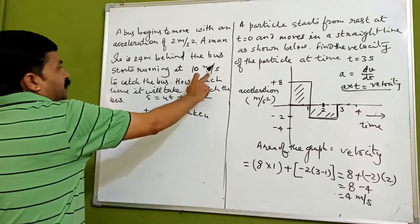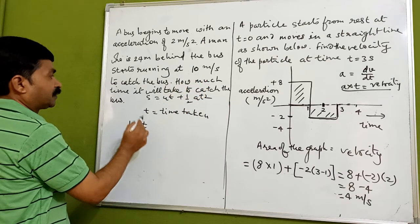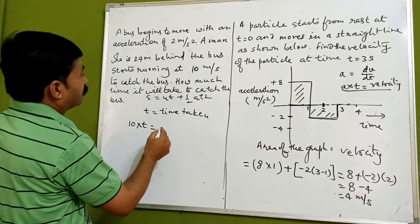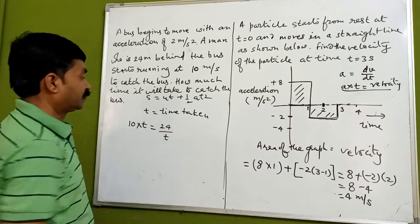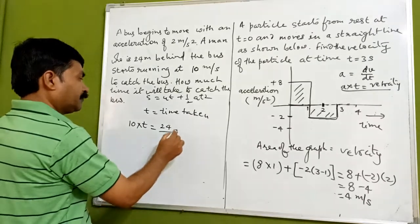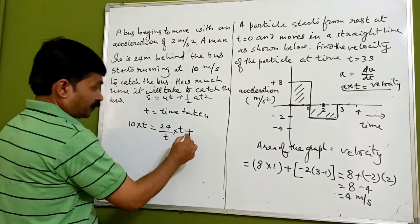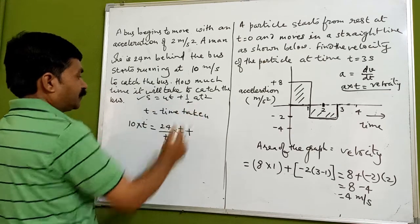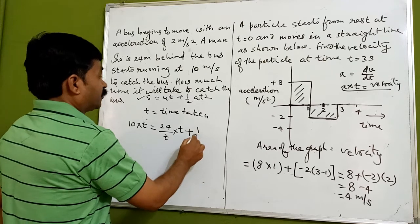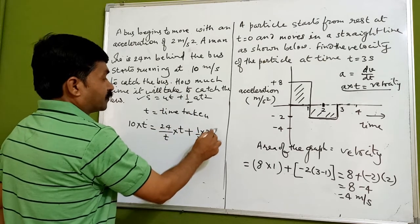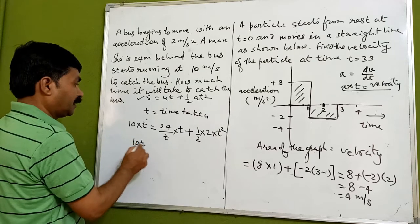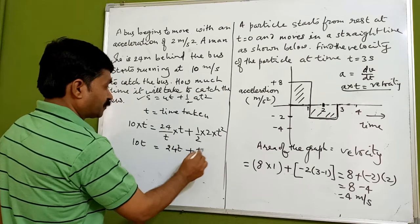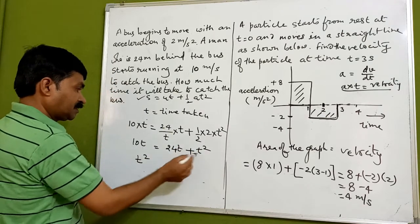Using the equation s = ut + ½at², the man's distance covered is 10t. The bus starts from rest so its distance is ½ × 2 × t² = t². For the man to catch the bus, the man's displacement must equal the bus's displacement plus the 24-meter gap. So: 10t = t² + 24, which gives t² - 10t + 24 = 0.